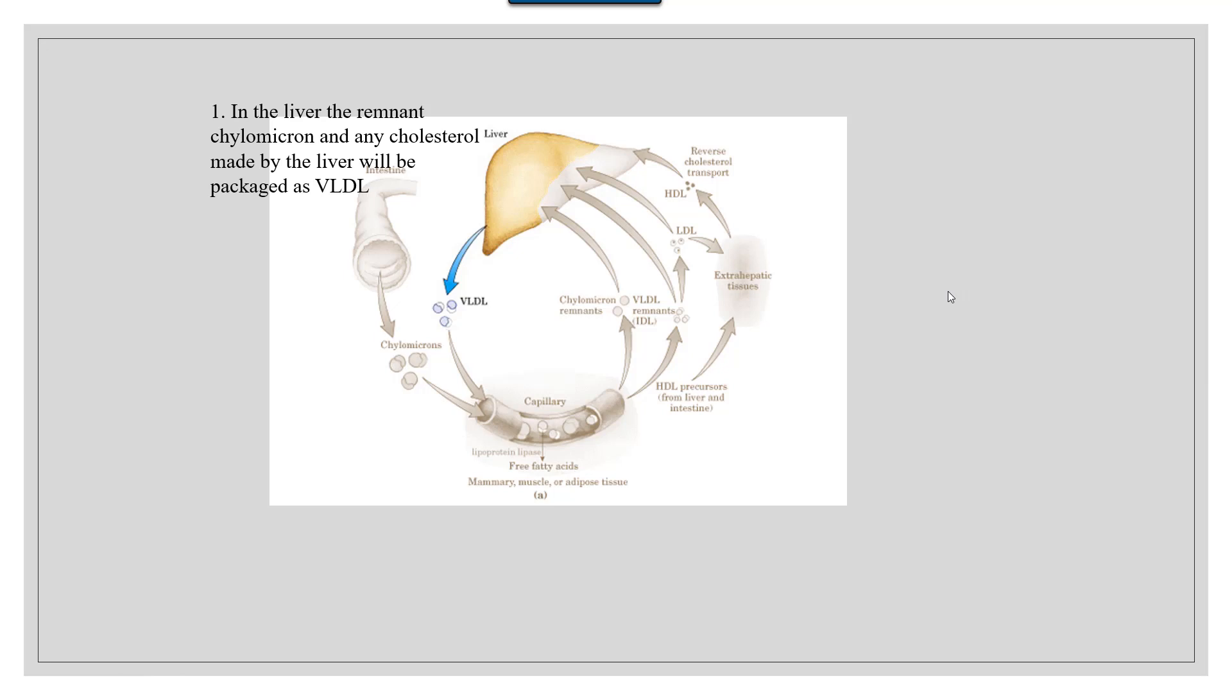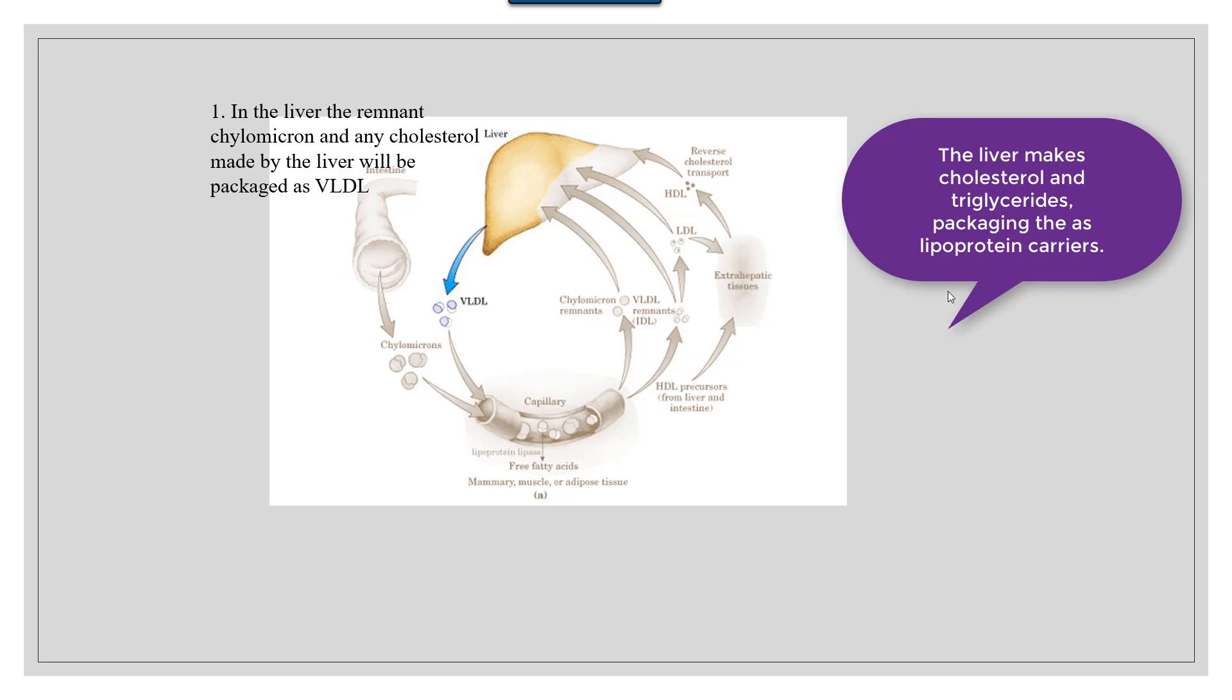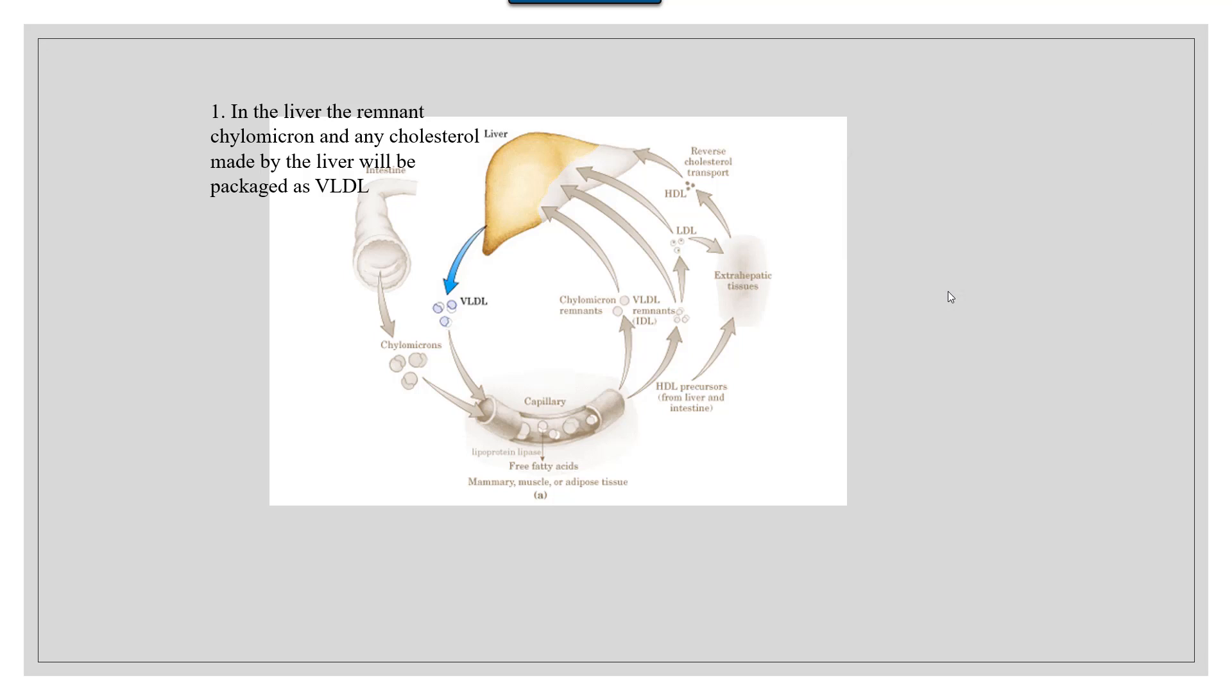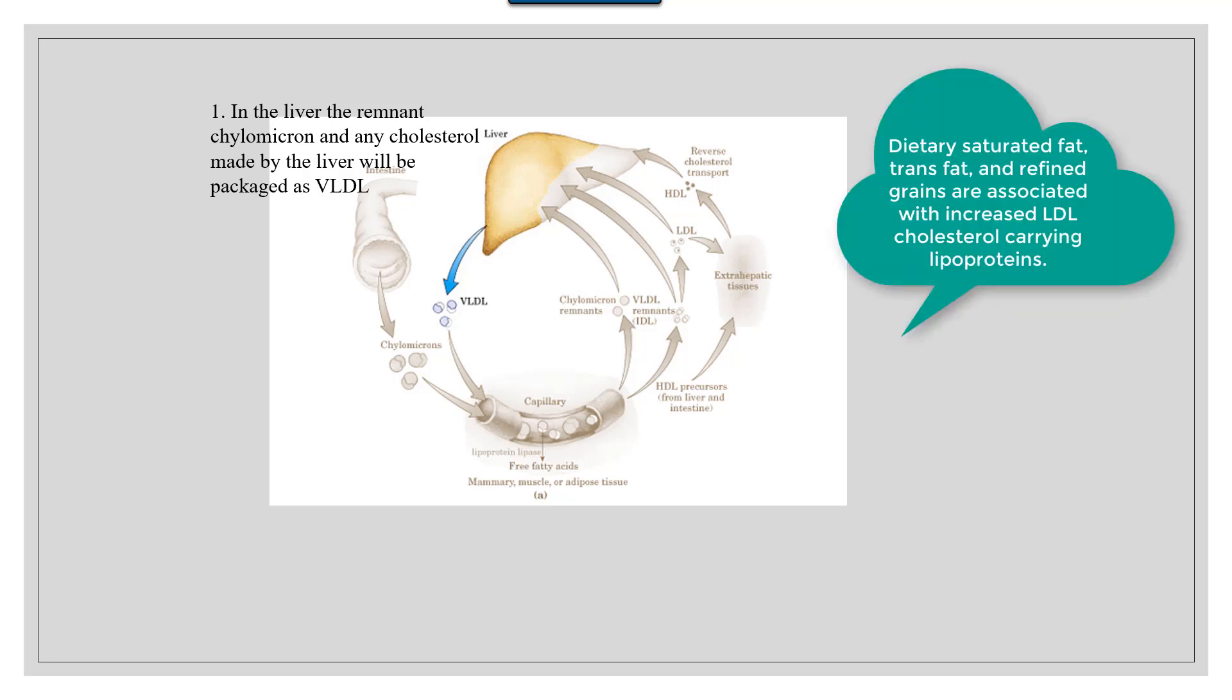The liver makes cholesterol and triglycerides. The question is what triggers the body to make them? From research, we know that high amounts of saturated and trans fat are made into cholesterol. High intakes of overall fat and carbohydrate are made into triglycerides.